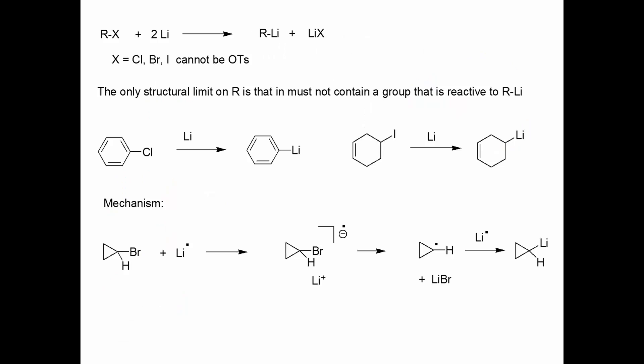So let's look at how we form organolithiums. Organolithiums are formed by the reaction of an alkyl halide — important here that it has to be a halide. This is one of the reactions where we just can't substitute a tosylate for a halide. This reaction in the balanced equation will produce the organolithium reagent and one mole of the lithium halide as a byproduct. All types of R groups pretty much work: R can be sp3, sp2, or sp carbon. The only structural limit is that it just can't contain another group that's reactive to an organolithium reagent.